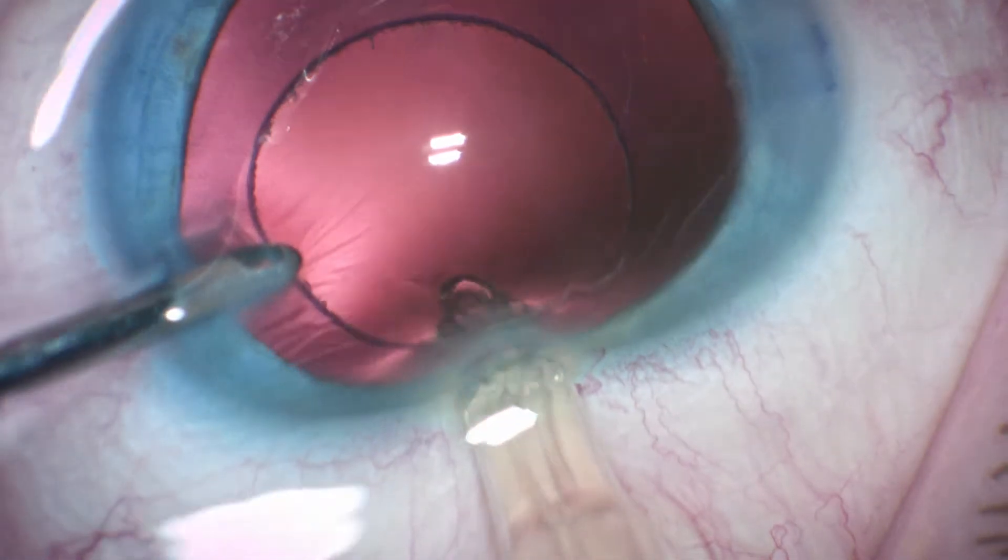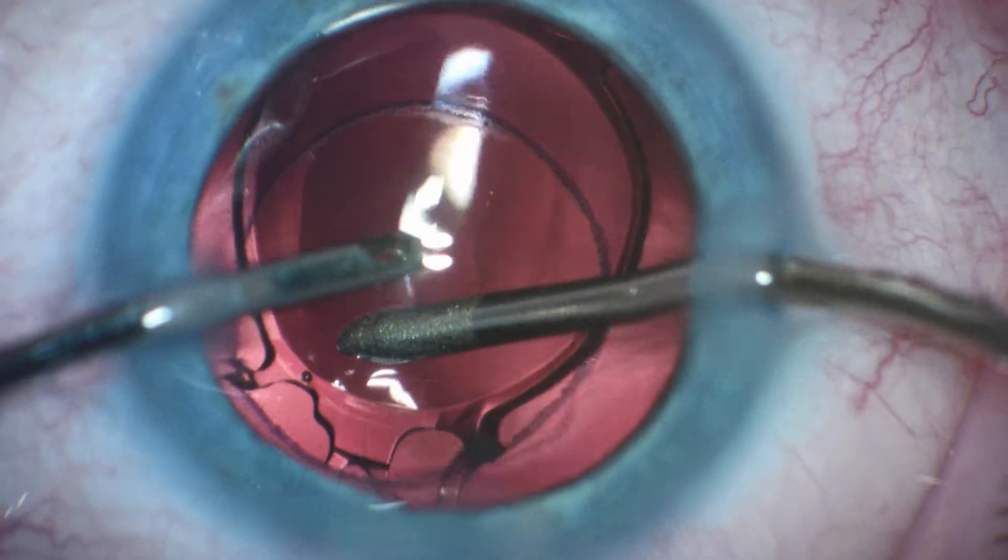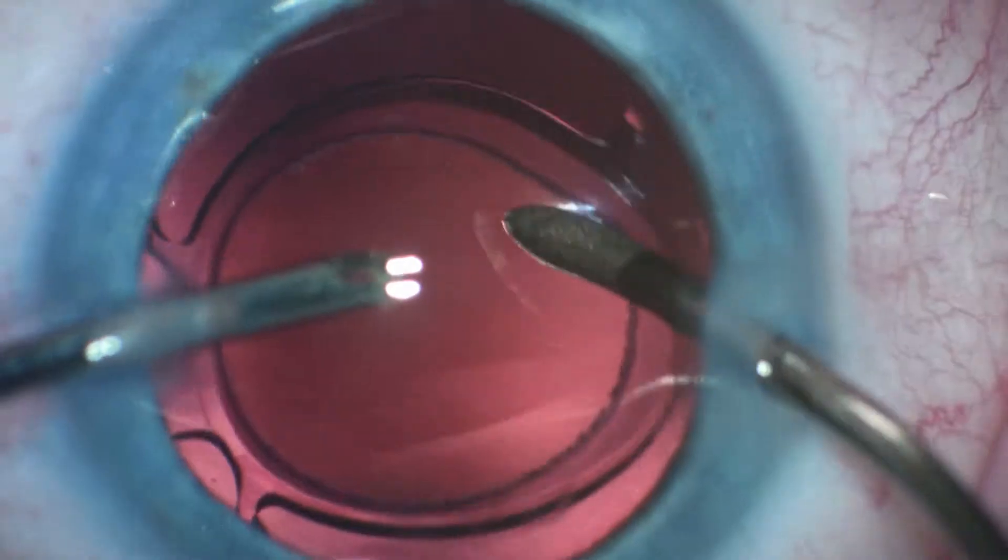After the cataract has been safely removed and the lens cortex aspirated, the intraocular lens is implanted and the capsulotomy edge is further cleaned by an irrigating, aspirating cannula.